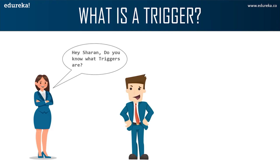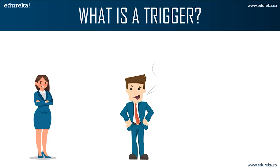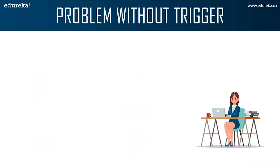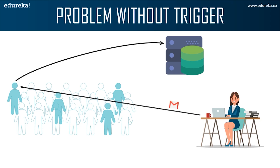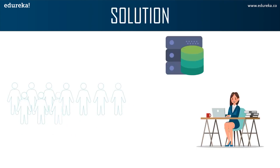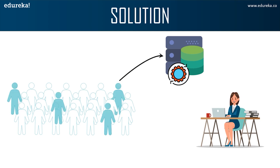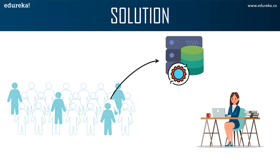Here we can see Anna is asking Sharon about triggers. Sharon imagines a trigger as falling dominoes. Anna is a marketing officer in a company. When new customer data is entered into the company's database, she has to send a welcome email to each new customer. If it's one or two customers, Anna can do it manually, but what if the count is more than a thousand? It would be repetitive and tiring. In such a scenario, triggers come in handy — Anna can create a trigger that automatically sends a welcome email once data is entered into the database, without needing to monitor it frequently.